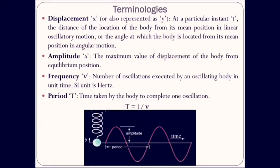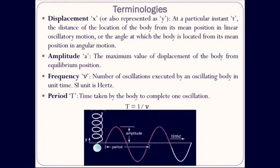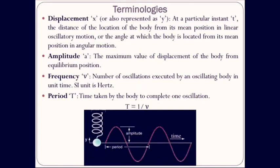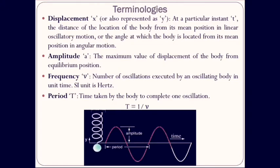If you observe the image shown, there is a mass attached to a spring undergoing oscillations. At any instant of time t, the distance of the mass from its mean position is called its displacement. In circular or oscillatory motion, the angle covered by the body from its mean position at any instant of time t is called its displacement. The next term is amplitude — the maximum value of displacement of the body from its equilibrium or mean position.